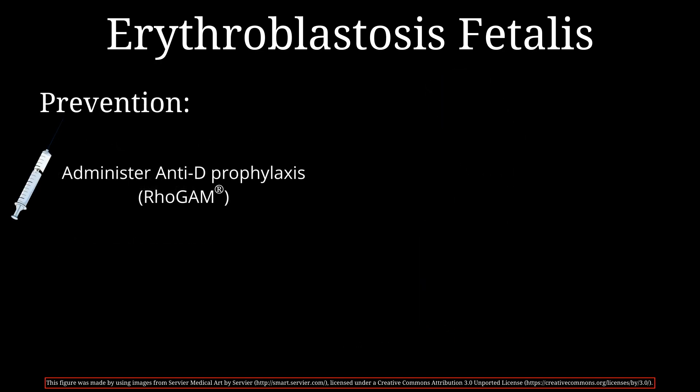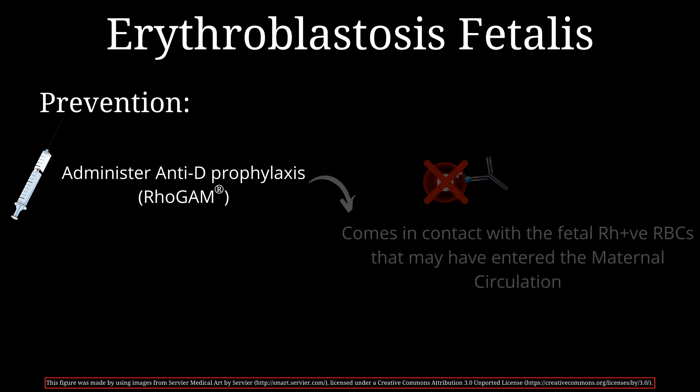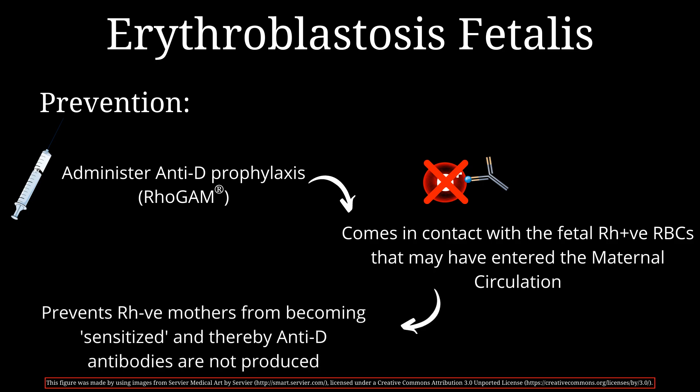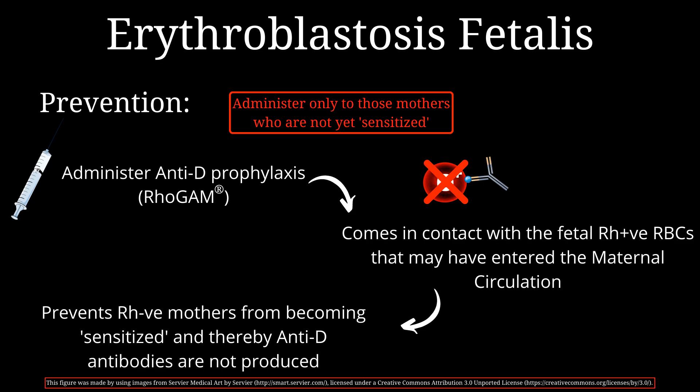As for prevention, RhoGAM can be administered to mothers with RH negative blood to prevent them from becoming sensitized to RH positive blood. This is an anti-D prophylaxis that comes into contact with RH positive red cells that may enter the maternal circulation during labor or childbirth, binds to the RH antigens on those cells, and blocks them — preventing the mother's immune system from becoming sensitized and producing anti-D antibodies. A physician would ideally administer RhoGAM to RH negative mothers carrying an RH positive baby towards the end of pregnancy. Importantly, RhoGAM is only administered to those who are not yet sensitized; if the mother has already been exposed to RH positive blood, anti-D antibodies are already present in her serum and this prevention won't help.